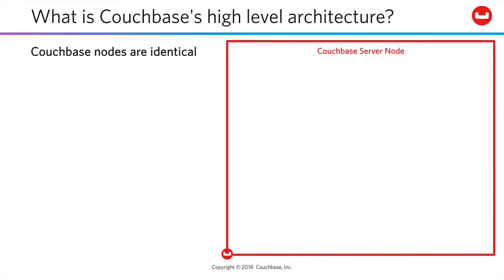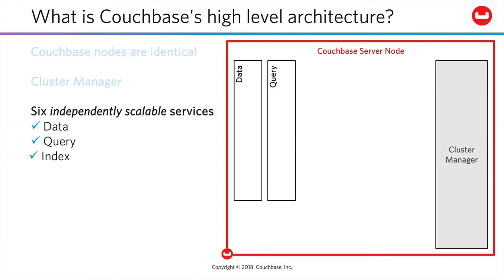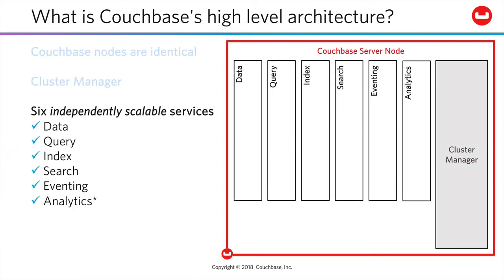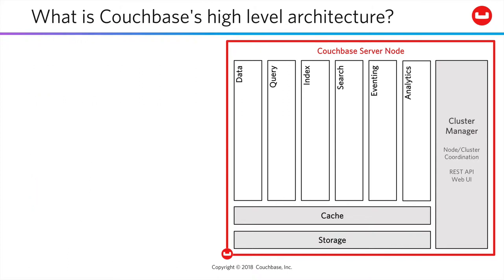Couchbase nodes are literally identical in their potential and capabilities. At a high level, each node has a cluster manager and exposes six services: data, query, index, search, eventing, and analytics, which each provide appropriate caching and storage for their role. Beyond the cluster manager, which coordinates the cluster and exposes our comprehensive REST API along with the web UI, the six services expose all the functionality of Couchbase.